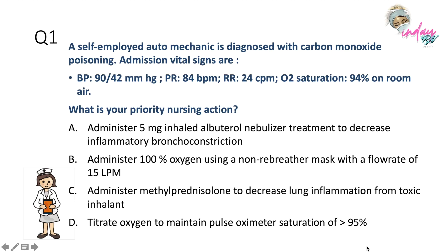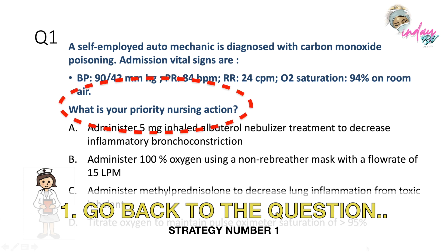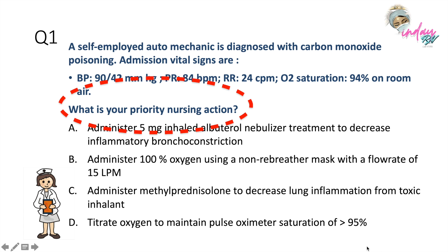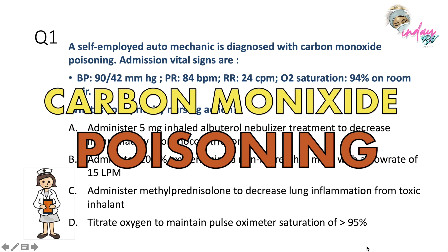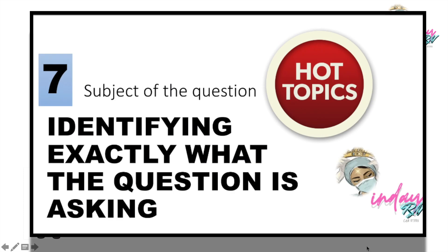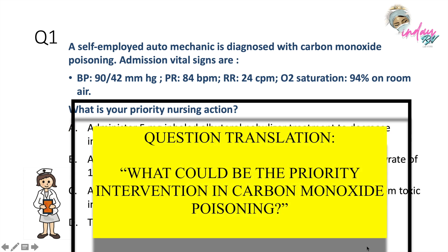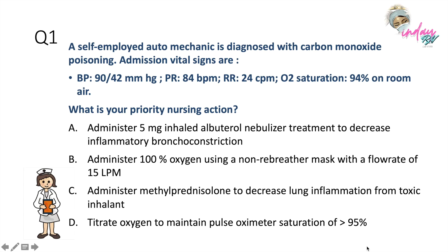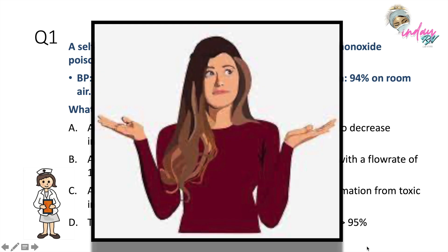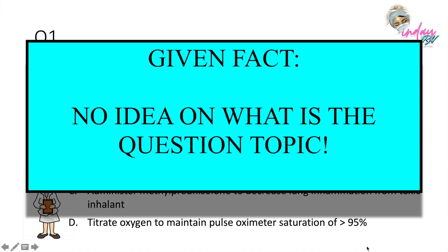The question is asking for prioritization — what is the first thing you're going to do as a nurse? Go back to the question: it mentions carbon monoxide poisoning, which is your hot topic. The next hot topic is prioritization. What if you don't have any idea what carbon monoxide is? We are going to apply the guessing technique.